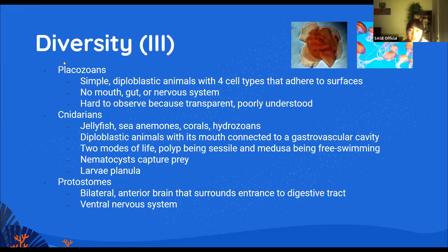Placozoans are animals with four types of cells that stick to surfaces. They are poorly understood in the animal realm and really hard to observe for scientists because they're usually transparent. The image on the top right is an example of a placozoan.